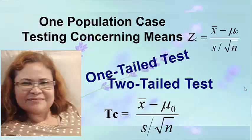the standard deviation of the sample over the square root of n, whichever is appropriate. If the Student's t-distribution is used, the x-bar or the mean is transformed into the t-statistic with this formula: computed t is equal to x-bar minus the hypothesized value of mu divided by the sample standard deviation over the square root